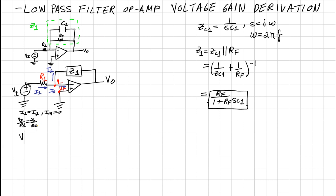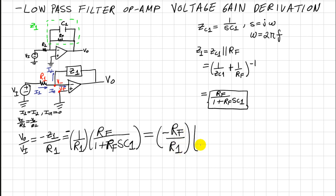So solving for Vout over Vin, we have Vout over VI is equal to negative Z1 over R1. That's equal to (1/R1) times—and I forgot the negative, so let me put a negative here—RF over (1 plus sRFC1). And we can reduce that to be -RF/R1 times 1/(1 + sRFC1).